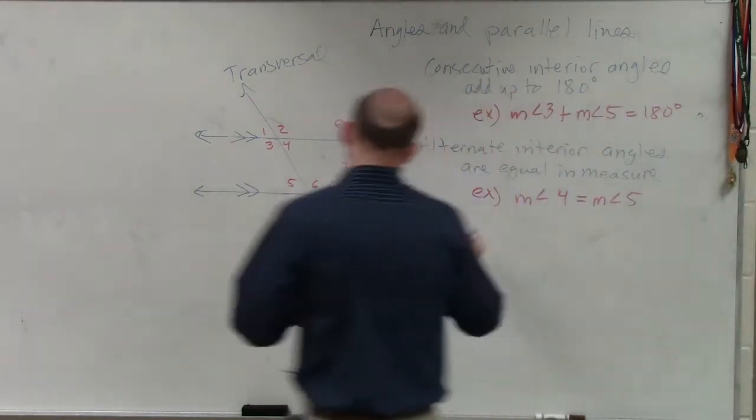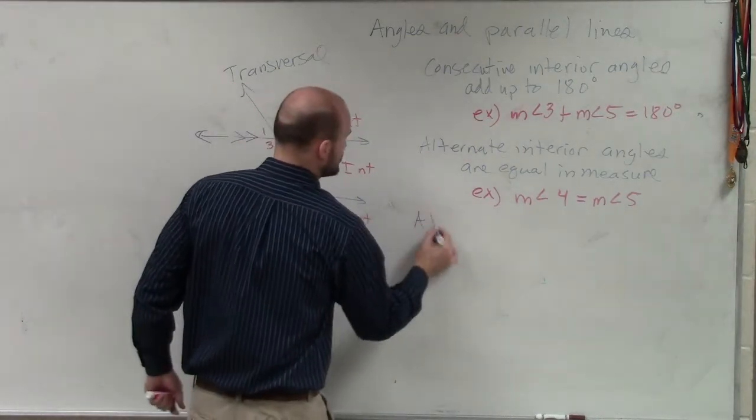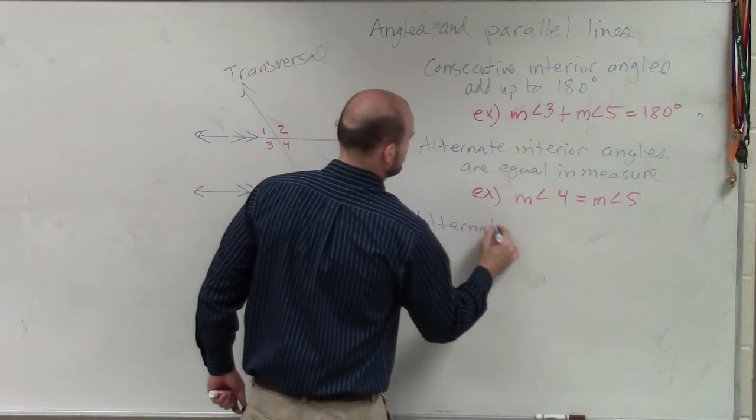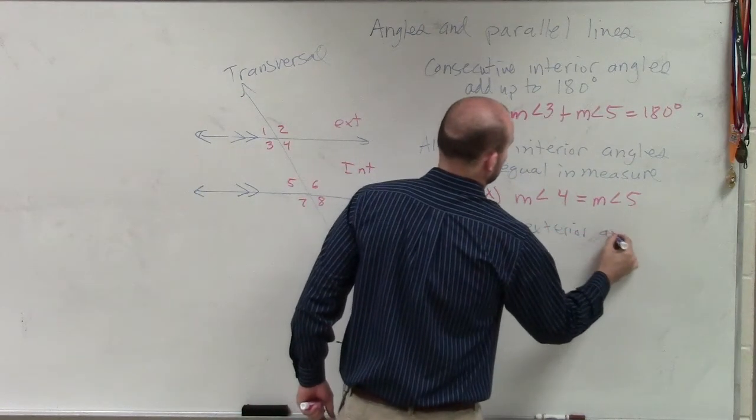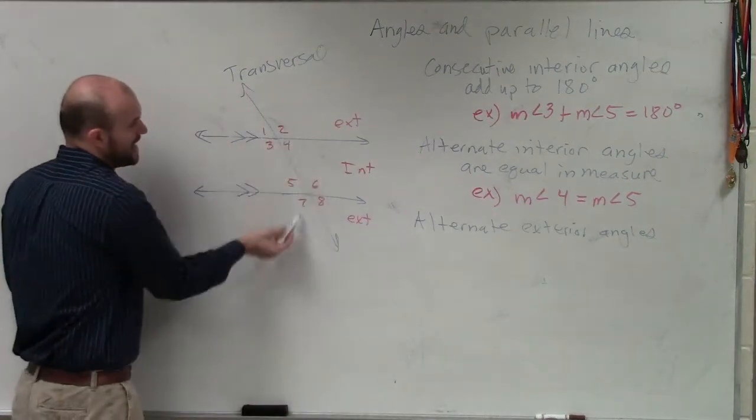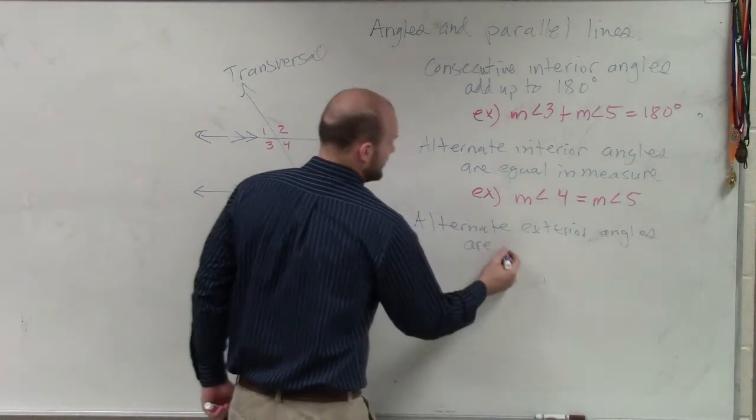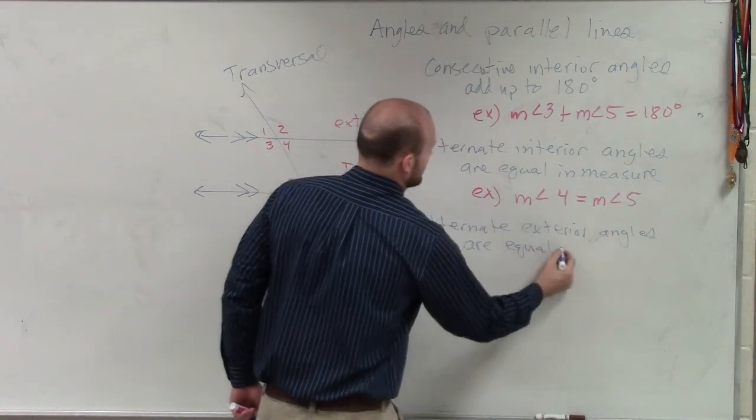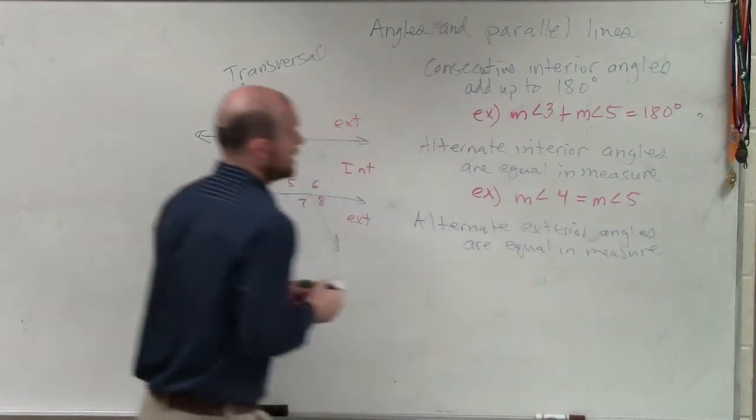The next one we talked about was now we're getting out of the interior, now we talked about exterior. So we talked about alternate exterior angles. And you guys remember, alternate exterior angles are both exterior, but they alternate, again, the transversal. And those, again, are also equal in measure. All right?